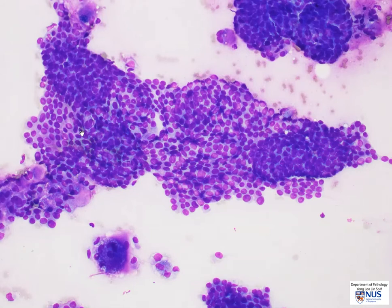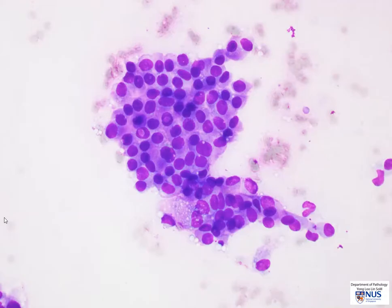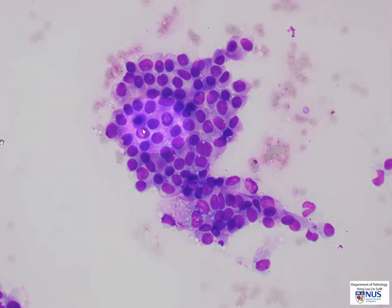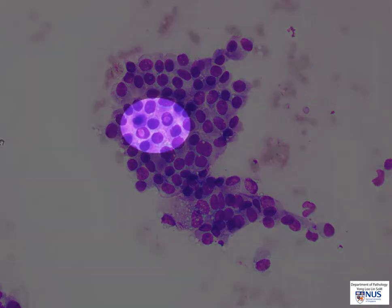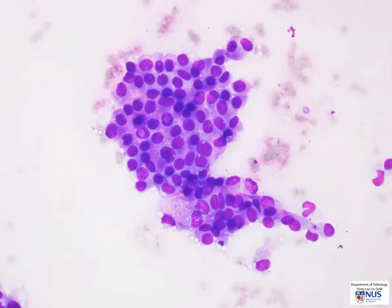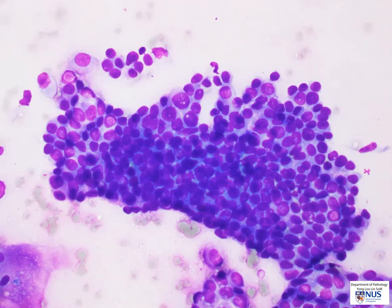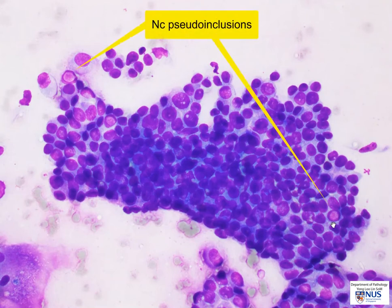Here is a flatter sheet. Sometimes there is a vague whirling architecture as well. And here on high magnification, we can actually see a couple of intranuclear inclusions. The follicular cells have a fairly homogeneous cytoplasm. Here again, we can see very well-formed nuclear inclusions.